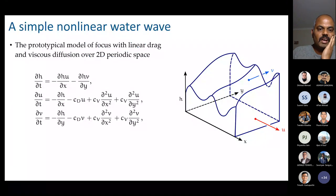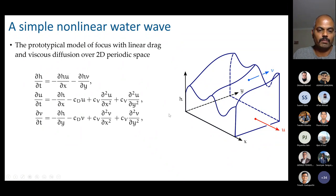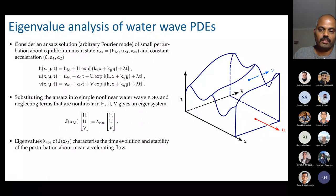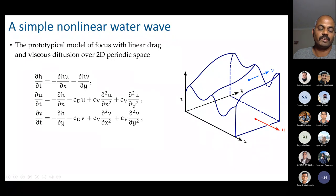The prototypical model for this talk is a simple non-linear water wave. The non-linearity comes from the multiplicative factors H*U and H*V. Here cd is the drag coefficient for bed friction and cv is the viscous diffusion coefficient comparable to viscosity. H is the height and U and V are horizontal velocities. This model will be used to develop and analyze patch schemes. To characterize how the PDE evolves, we substitute a constant solution to identify a drift term: a uniform flow with constant height decelerates due to bed friction.